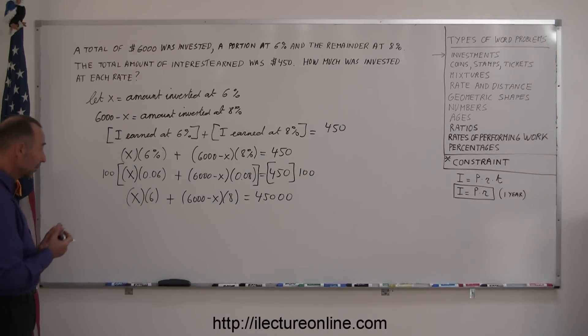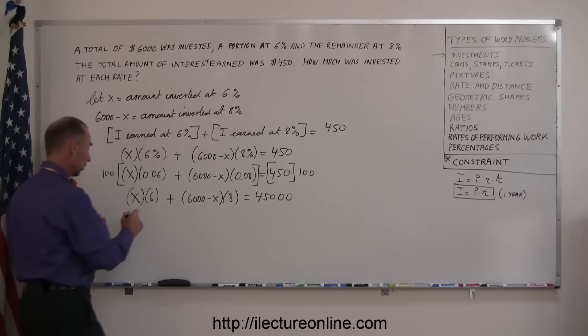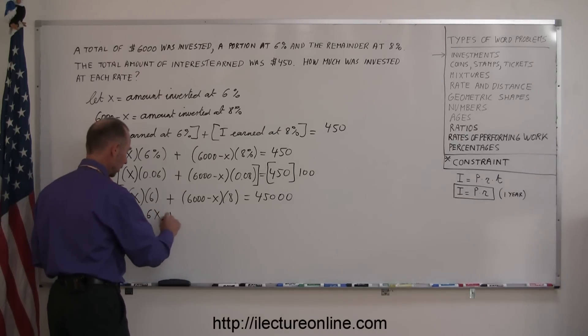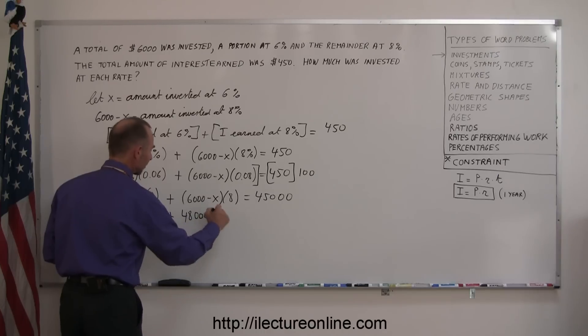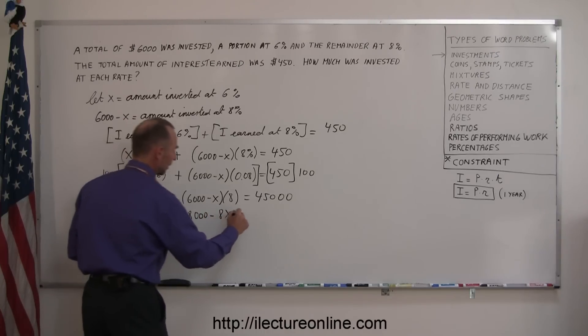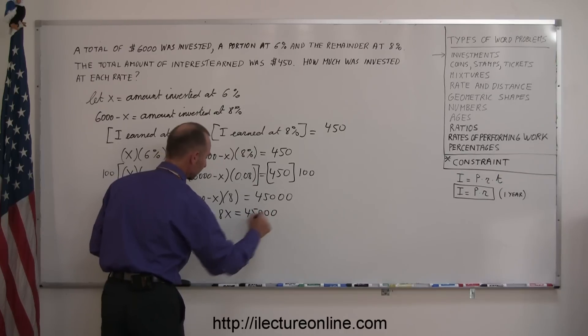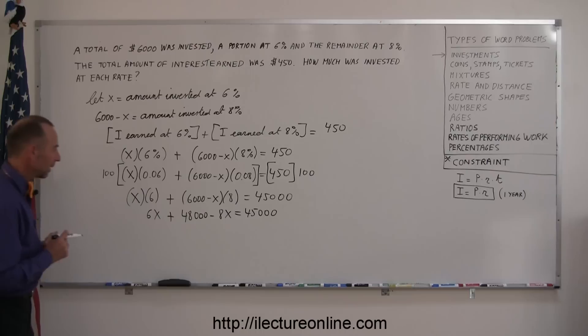Now, we'll go ahead and get rid of the parentheses and multiply everything together, so this is 6X plus 8 times 6,000 is 48,000, minus 8 times X is 8X, and that equals 45,000.